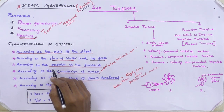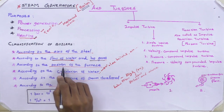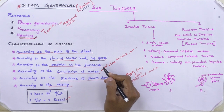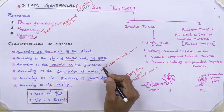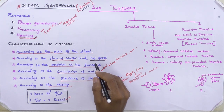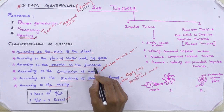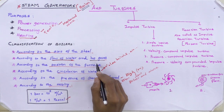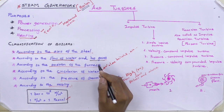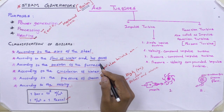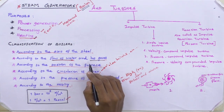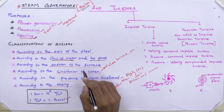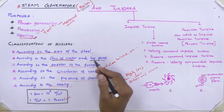The third classification is according to the position of the furnace. It may be externally fired or internally fired. The boiler is known as externally fired if the furnace or firebox is situated outside the shell. Example: Babcock and Wilcox boiler. In the internally fired boiler, the furnace is located inside the boiler shell. Example: Cochrane boiler or Lancashire boiler.